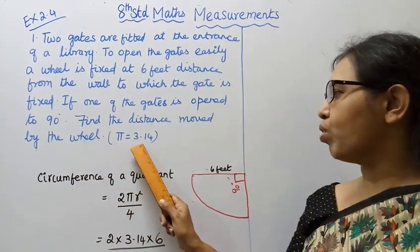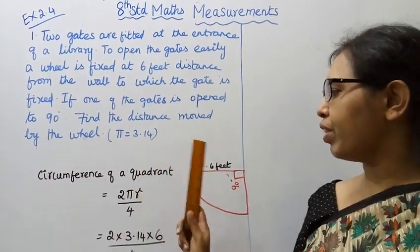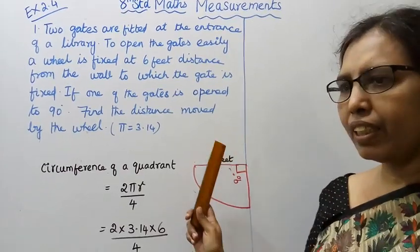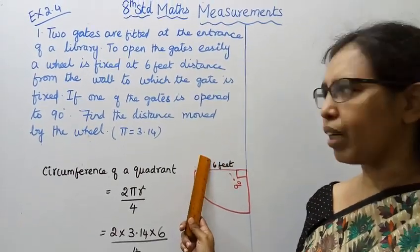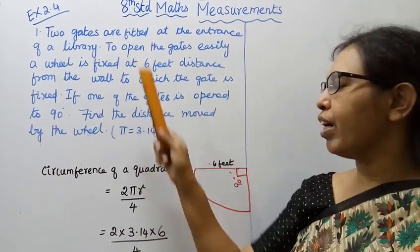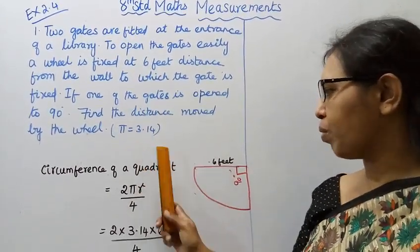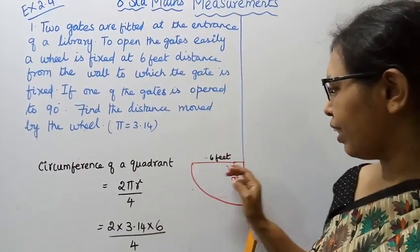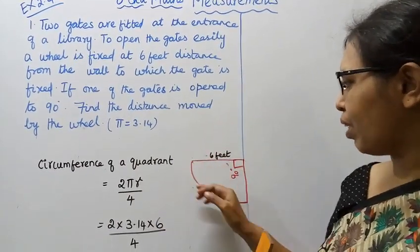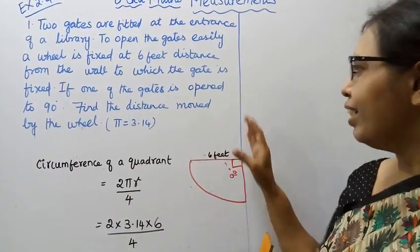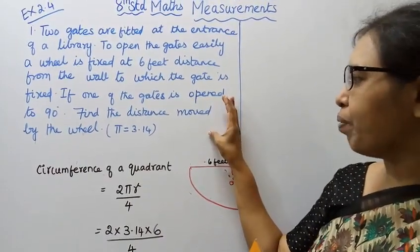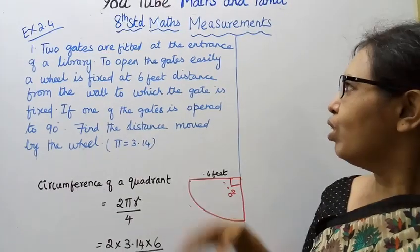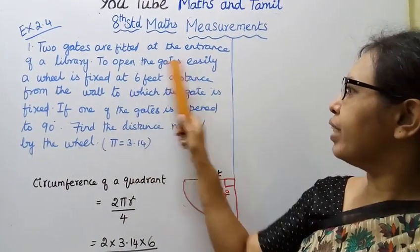Pi equals 3.14. In the diagram you can see the first sum in the textbook 2.4. That is a quadrant, which is the path mentioned by the wheel.